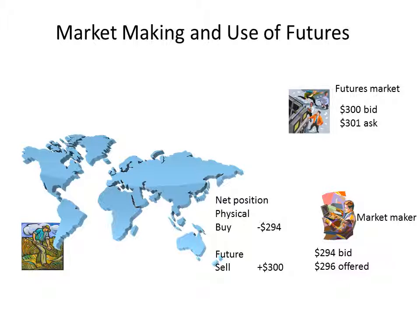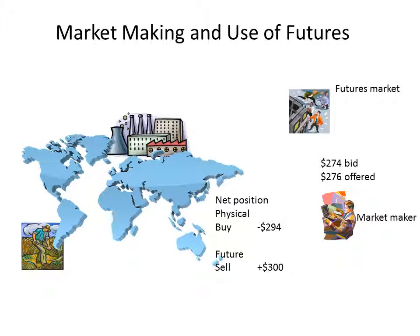A little while later, the market maker is approached by a manufacturer — a roaster, a miller, or a refiner for example. As time has gone by, physical prices in the market have fallen. To be competitive, the market maker quotes bid/offer spreads in a lower environment: 274 bid and 276 offered. The market maker also notes the futures prices are now at 279 bid and 280 offered.